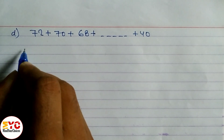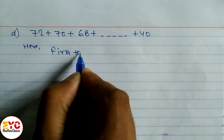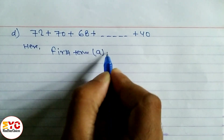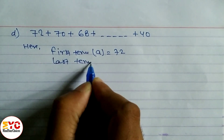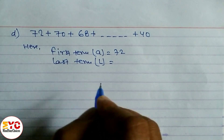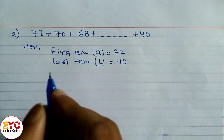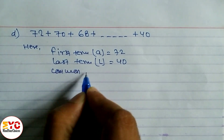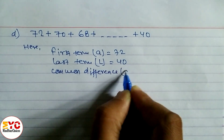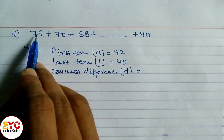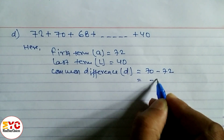Let's start question D. First term a = 72. Last term (b, l, or TN) = 40. Common difference d = t2 − t1 = 70 − 72 = −2.